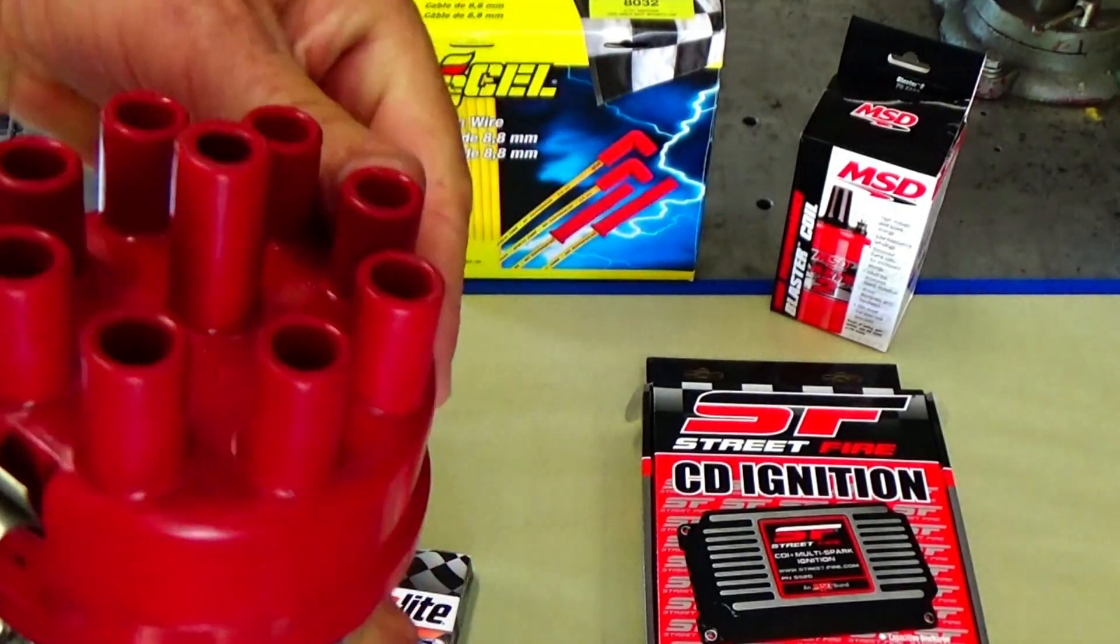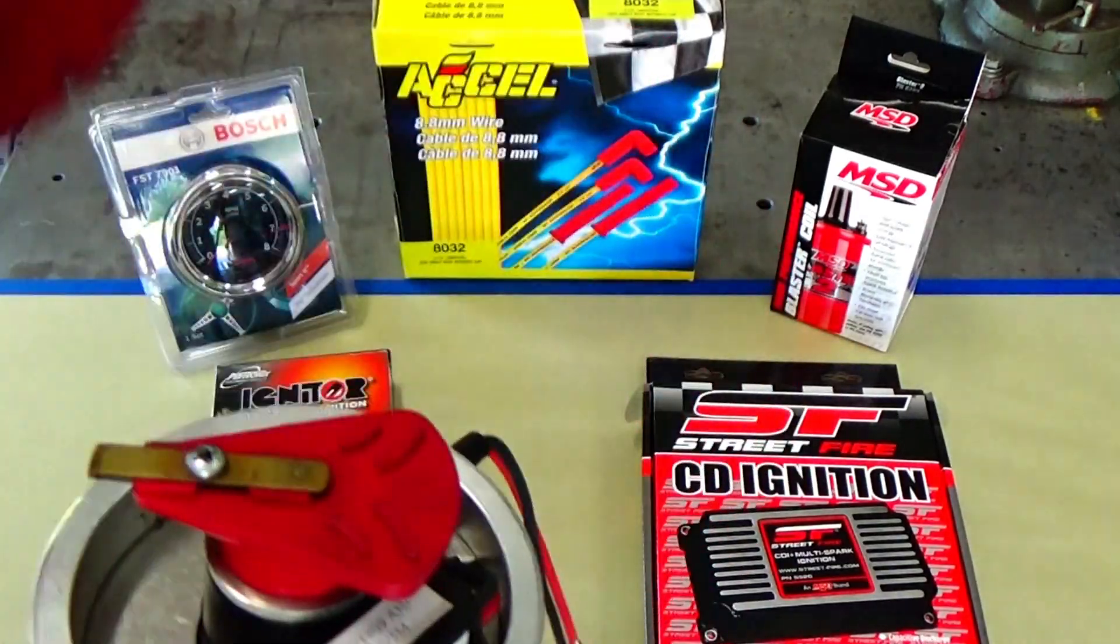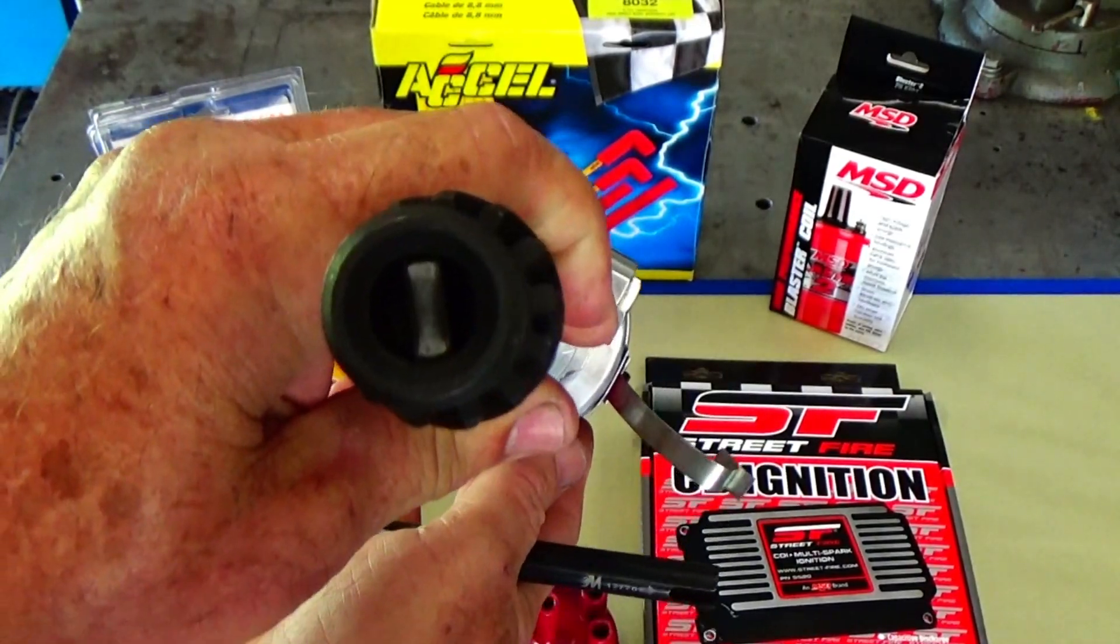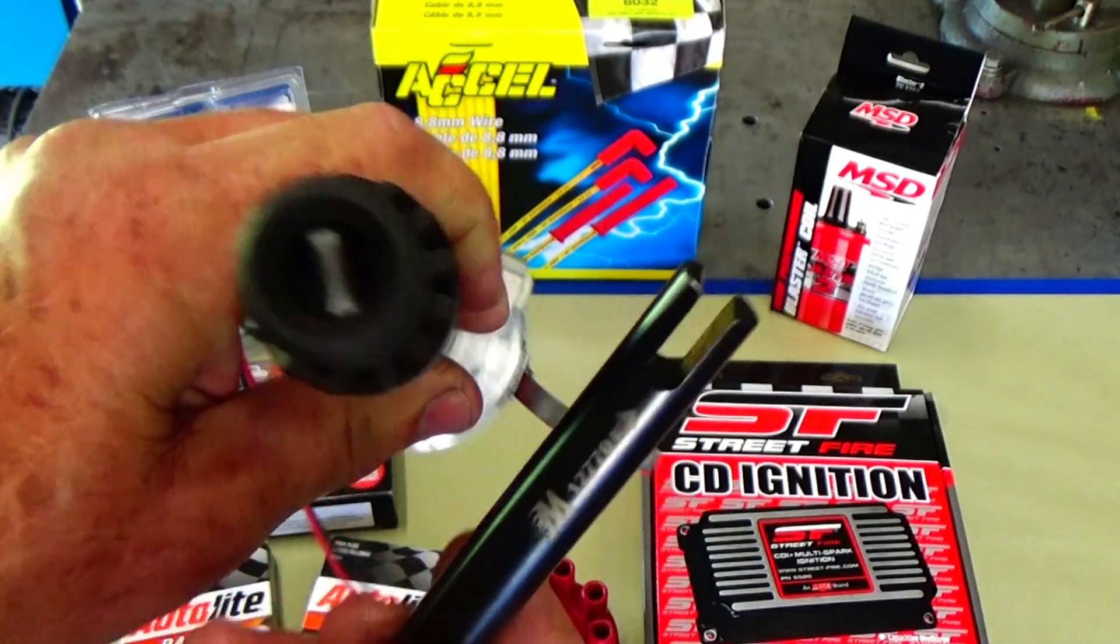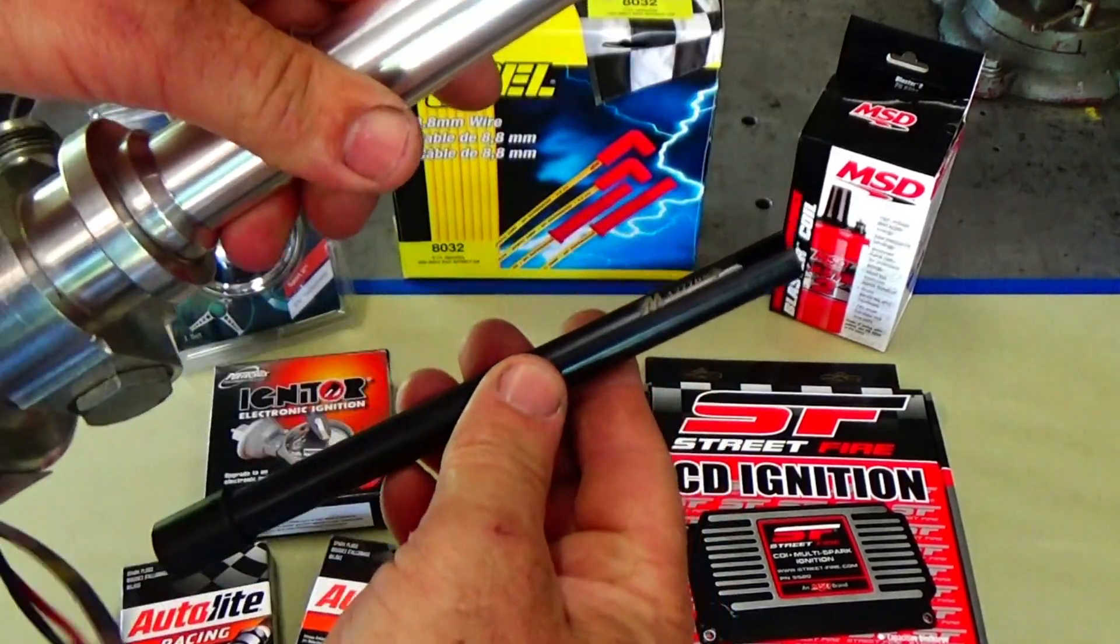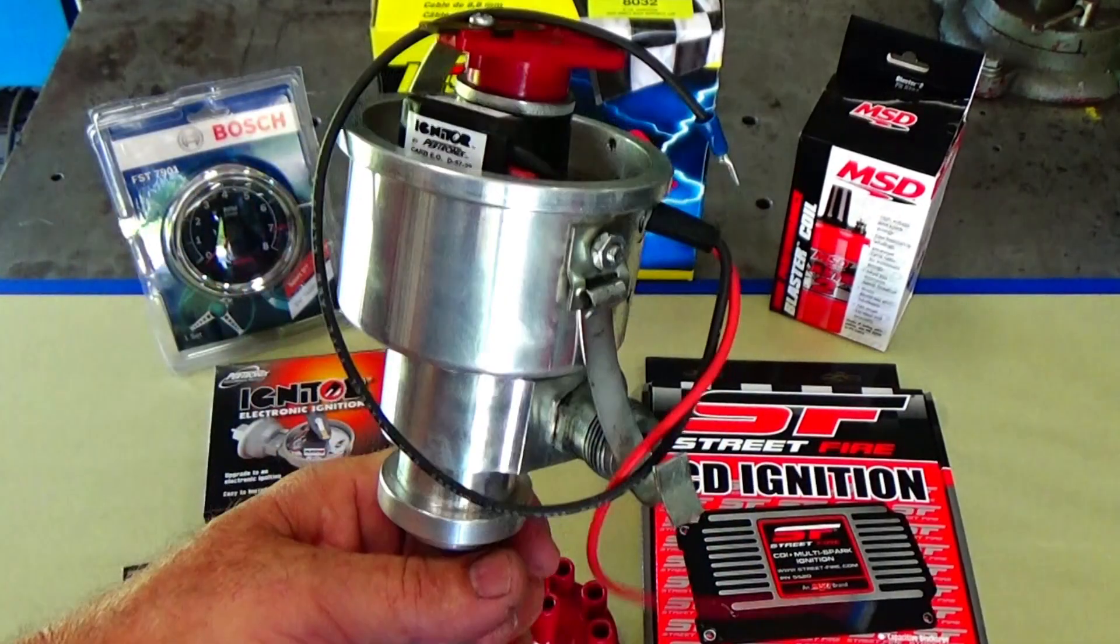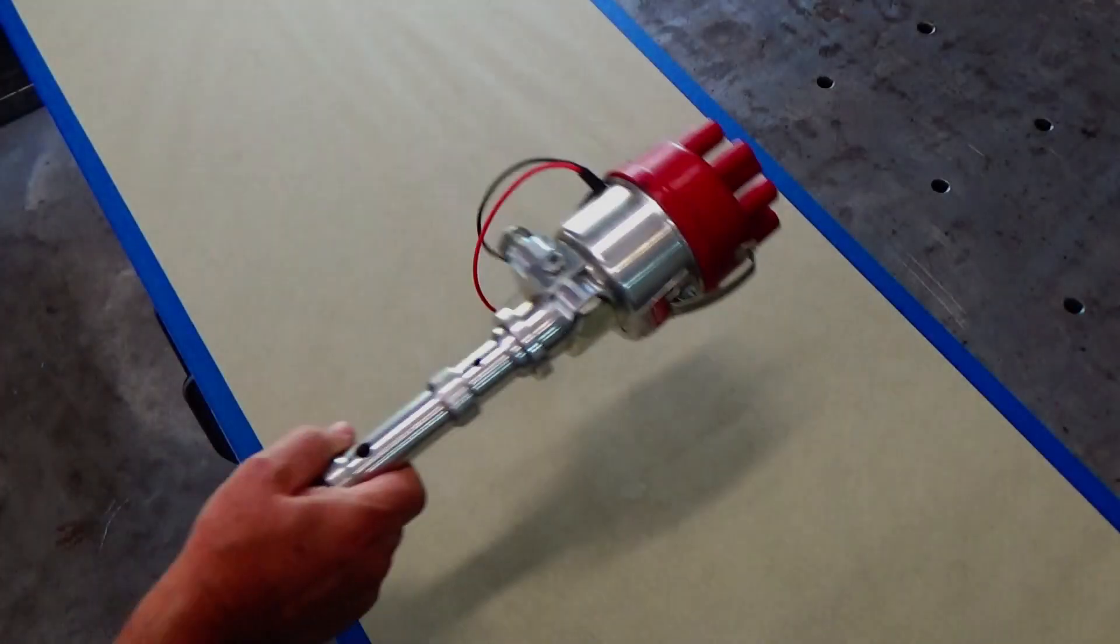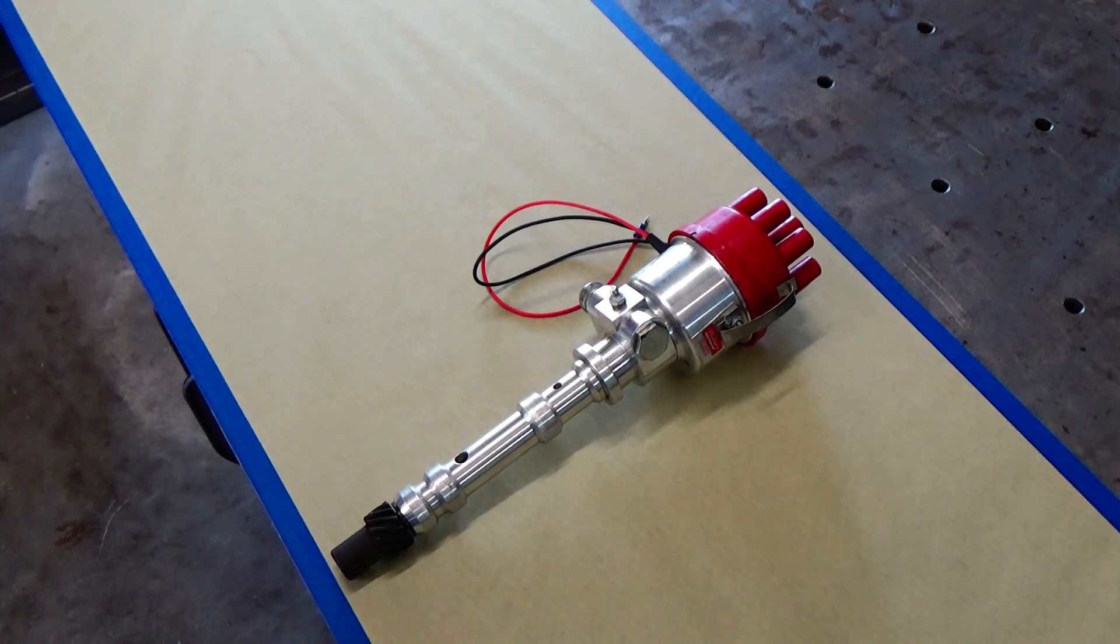Now, with that old distributor there, if we could figure out a way to hook something to it to spin it, we could do some tests on all this electronic ignition stuff that we bought to run that engine. So if I could make something that would fit up in there and spin that distributor pretty quickly, we might have tested some of this stuff even before we install it on the engine.